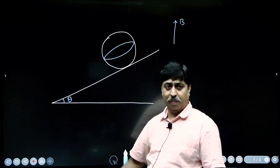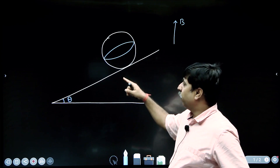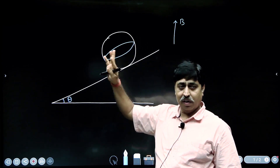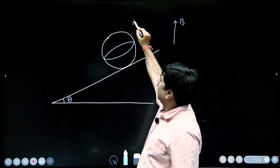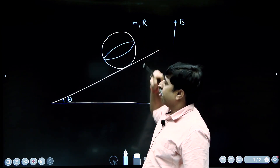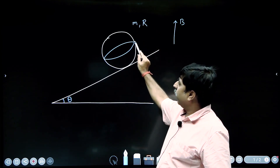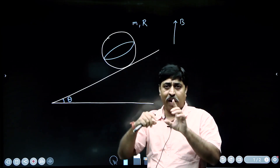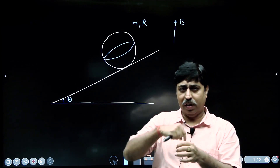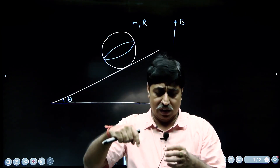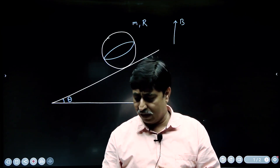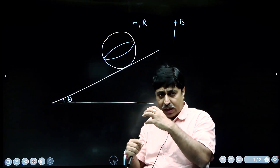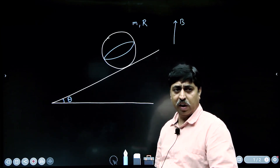This is an inclined plane and on this inclined plane there is a sphere. This white colored thing is a sphere of mass m and radius r. On the equator of this sphere there is a coil having one single turn — a single turn coil wound along the equator of the sphere.